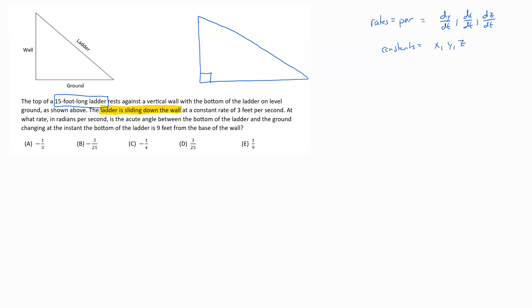So in this situation, a 15-foot long ladder, that's a constant piece. That's not a rate of change. So I'm going to label this side here the hypotenuse. That's the ladder. I'm going to put that as 15.